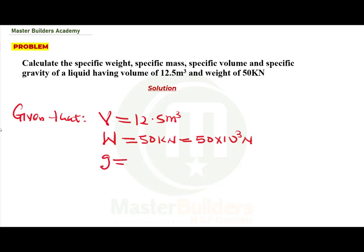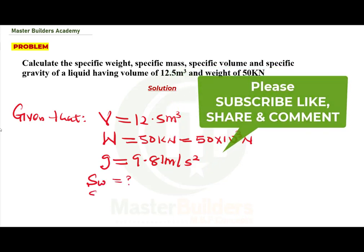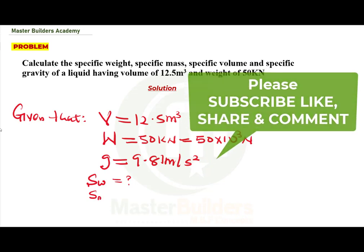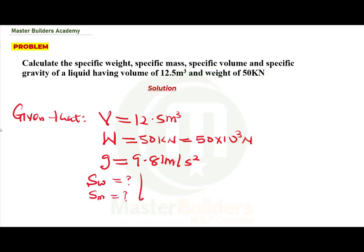g = 9.81 m/s². The unknowns are: specific weight, specific mass, specific volume, and specific gravity — all four are unknown.